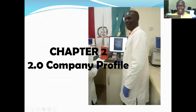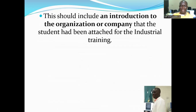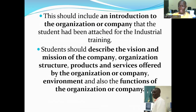Chapter two contains the company profile. The student is expected to write about the company where they were attached for industrial training. This should include information about the organization, the vision and mission of the company — which you can get from where you did your IT — the organization structure, products and services offered, the environment where the company is established, and functions of the organization.